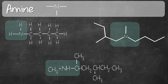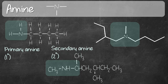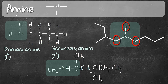In the first structure, that nitrogen is connected to one carbon and two hydrogens, so we classify it as a primary amine because it's connected to only one carbon. In the second structure, it's a secondary amine because that nitrogen is connected to two carbons and one hydrogen. In the third example, all three single bonds on the nitrogen are connected to carbons, so that's a tertiary amine.